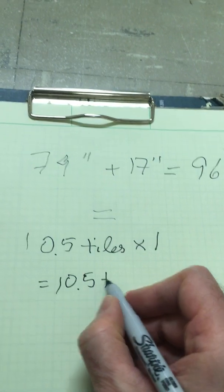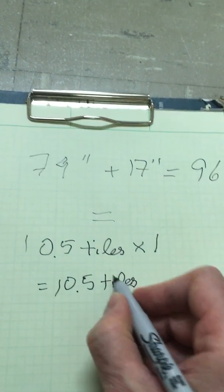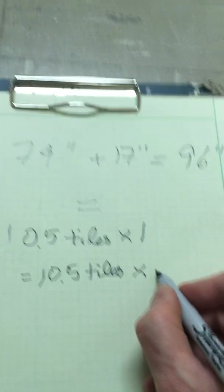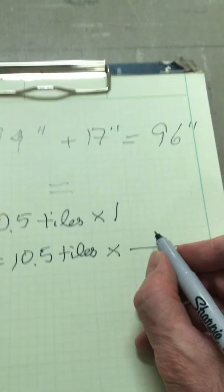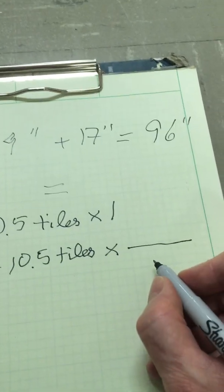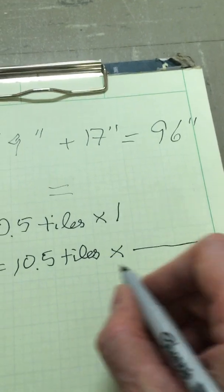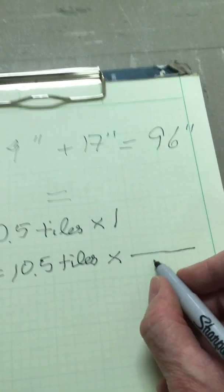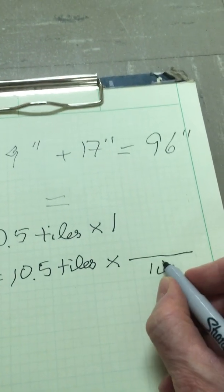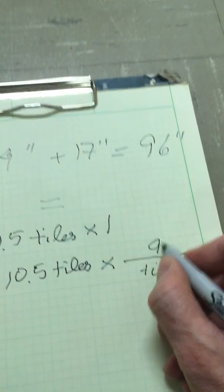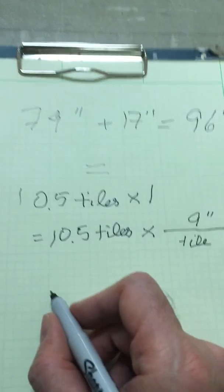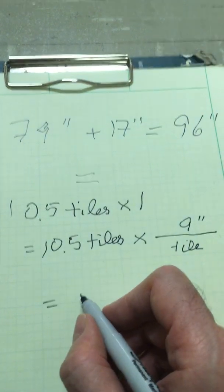Now that doesn't change things, does it? But now I'm going to rewrite one as a fraction. And I'm going to write something on top, and I'll write something that's equivalent on the bottom. I want to get rid of the units of tiles. One tile is equal to nine inches.